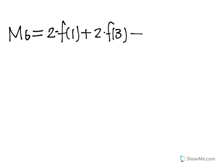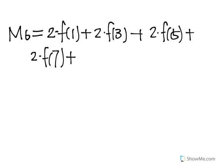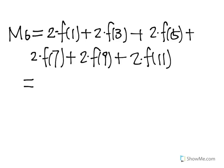Using these midpoints, we can find the area under the curve using width times height. So we do 2 times f of 1 plus 2 times f of 3 plus 2 times f of 5 plus 2 times f of 7 plus 2 times f of 9 plus 2 times f of 11. Using this equation, you should get the answer of 79.4.